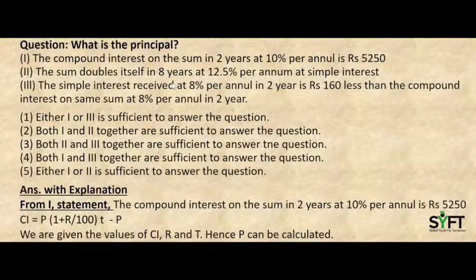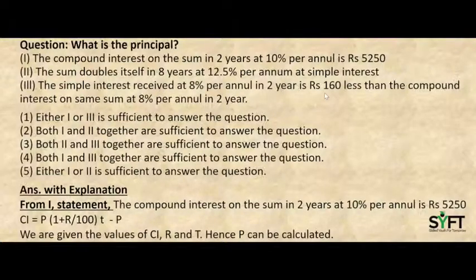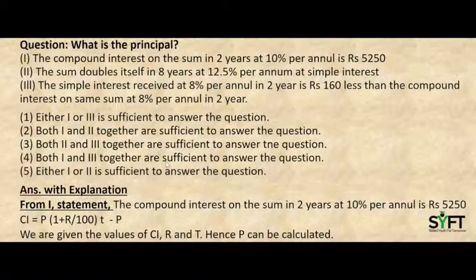Here we are solving some basic questions related to data sufficiency to give you better clarity. This question asks: what is the principal? Three statements are given. Statement 1: the compound interest on the sum in two years at 10% per annum is Rs. 5,250. Statement 2: the sum doubles itself in eight years at 12.5% per annum at simple interest. Statement 3: the simple interest received at 8% per annum in two years is Rs. 160 less than the compound interest on the same sum at 8% per annum in two years. The options are: either 1 or 3 is sufficient to answer; both 1 and 2 together are sufficient; both 2 and 3 together are sufficient; both 1 and 3 together are sufficient; or either 1 or 2 is sufficient to answer.